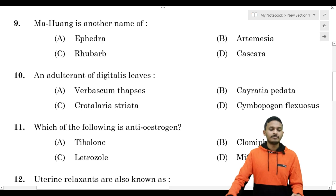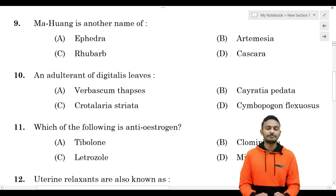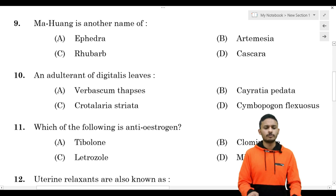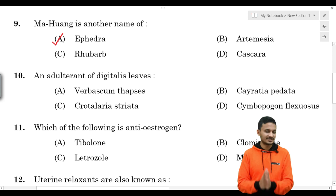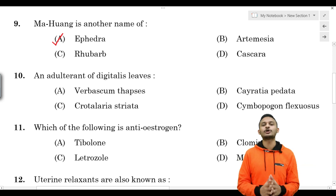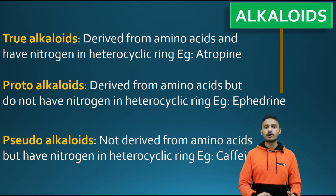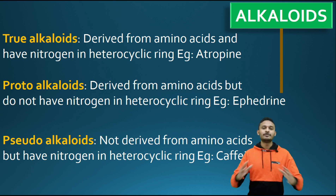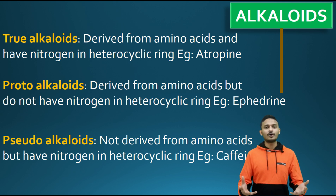Question number 9: Ma huang is another name for which plant? Options are: A) ephedra, B) artemisia, C) rubia, D) cascara. The correct answer is option A, ephedra. Ephedra is also known as Ma huang. This is an example of a protoalkaloid.